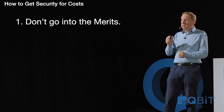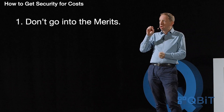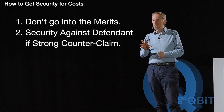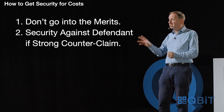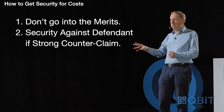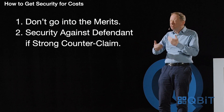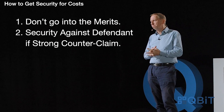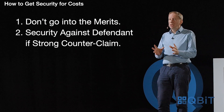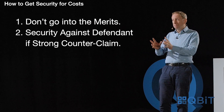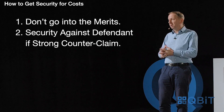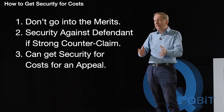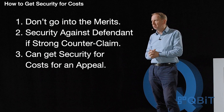The second general point is that most of those grounds are concerned with a claimant, but you can get security against the defendant if there's a substantial counterclaim, which means that in truth and reality they are the real claimant. The claimant can also be an appellant or a respondent who's cross-appealing, so you can get security for costs of an appeal even if the appellant was originally the defendant.